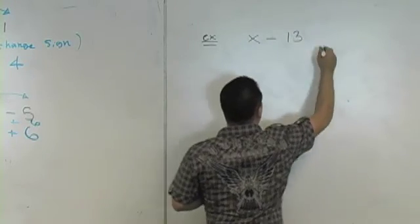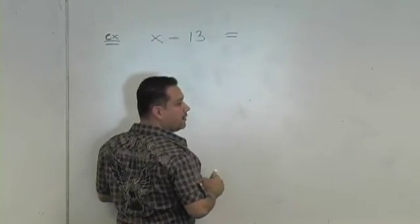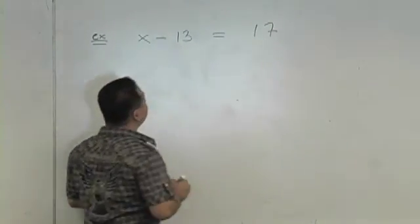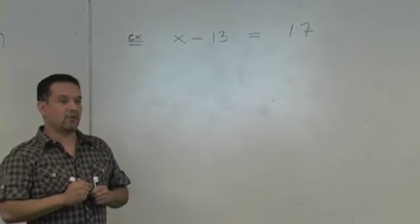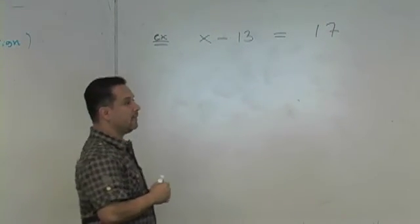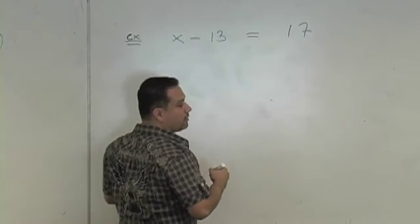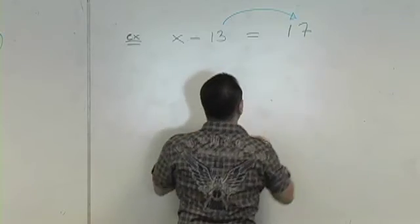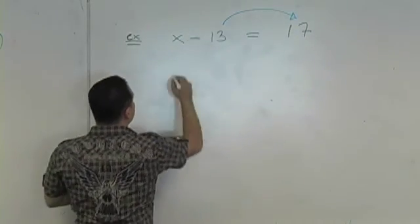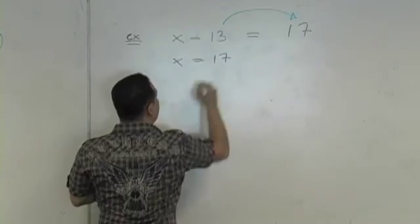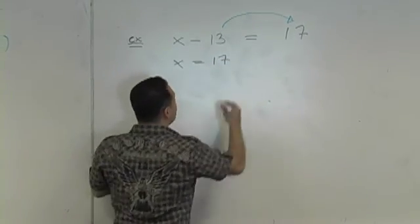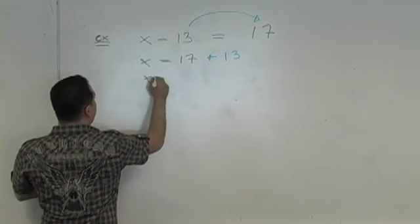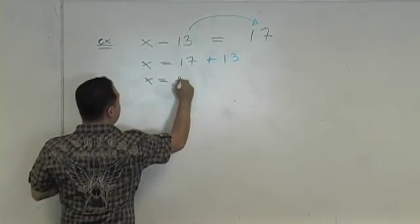How about this: x minus 13 equals 17. You're solving for x. How do you do that by translation? What term do you want to move? 13. It's now on the other side, what's its sign? Plus 13. So x will be 17 plus 13. What does that mean about x? x is 30.